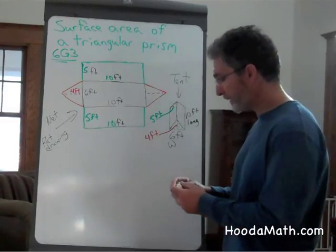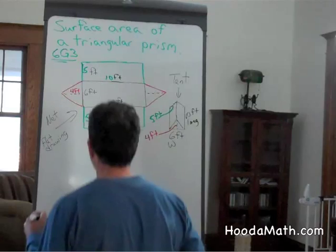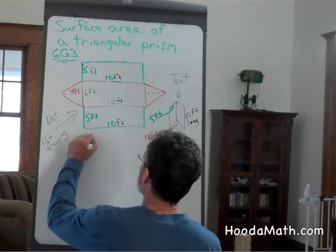Okay, so we'll begin. The bottom, six by ten, is 60 square feet.